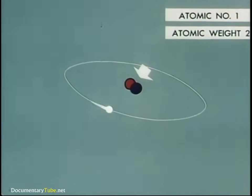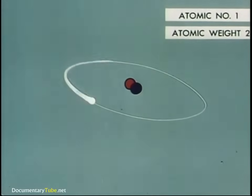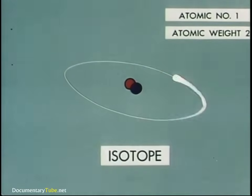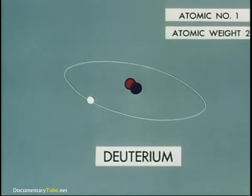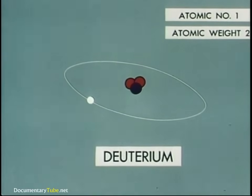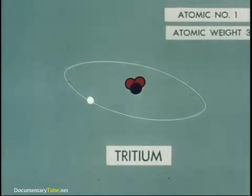It gives this form of hydrogen an atomic weight of two, the sum of the protons and neutrons in the nucleus. Different forms of the same element, with different weights but carrying the same electrical charges and having identical chemical behavior, are known as isotopes. For example, adding this neutron to a standard atom of hydrogen would produce this isotope of hydrogen known as deuterium. This is the hydrogen in heavy water. Adding another neutron produces a third hydrogen isotope called tritium.